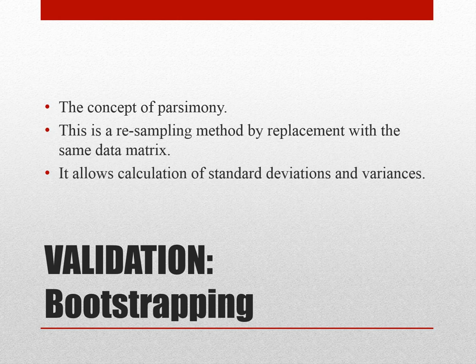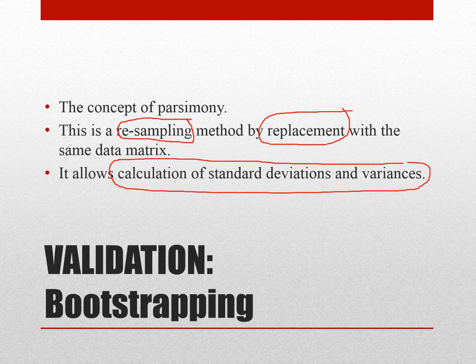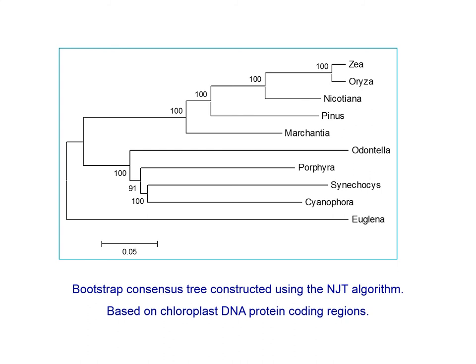One important thing which needs to be done after constructing a phylogenetic tree is bootstrapping. Bootstrapping is a resampling method in which you do not physically resample or conduct new experiments — you basically do a replacement within the data matrix. This permits the calculation of standard deviations and variances between different sets of nucleotide sequences. When you do a bootstrap, you have plant species like Zea mays (corn) and Oryza (rice).